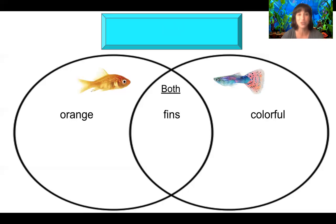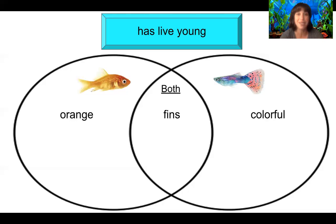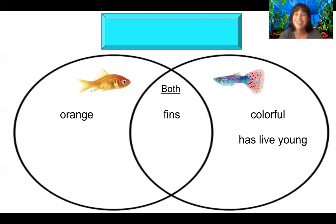Let's take a look at our next word — we have a sentence fragment: has live young. Do you remember from your videos which type of fish has live babies? This means that the babies are born fully formed right from the mother's body, just like people. Point right now if you remember. Guppies — that's right. Guppies have live babies right from their body. They're so much fun to see as they're born.